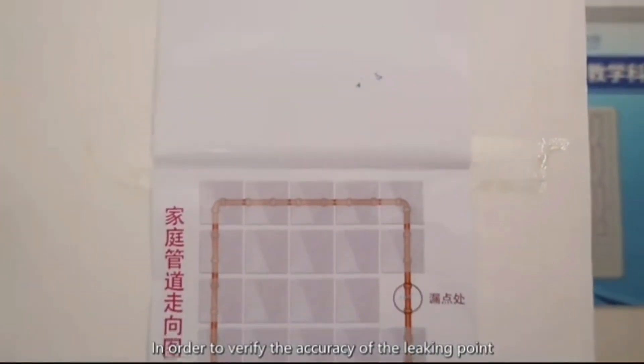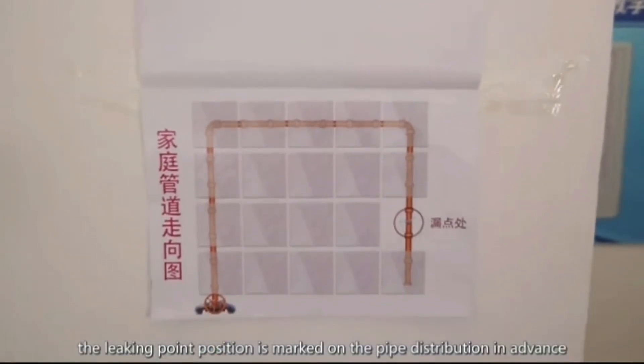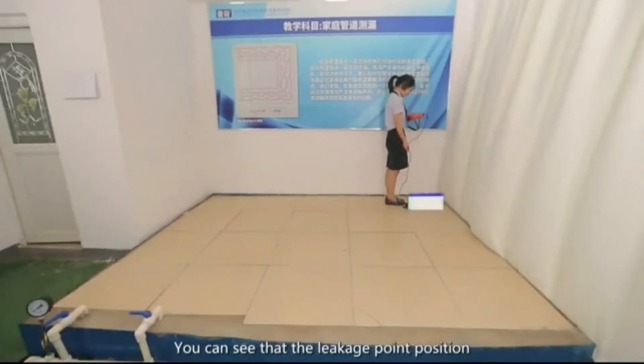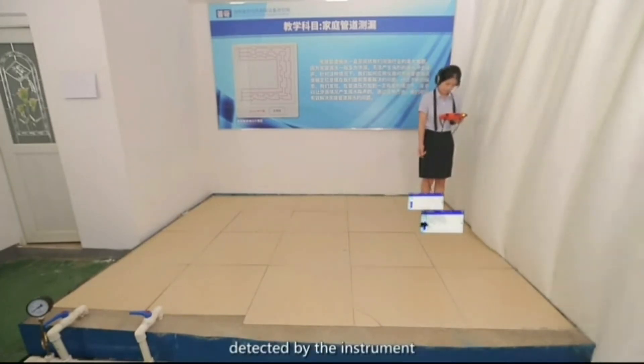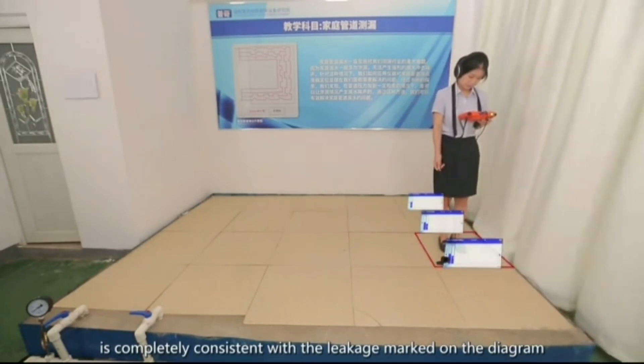In order to verify the accuracy of the leaking point, the leaking point position is marked on the pipe distribution in advance. You can see that the leakage point position detected by the instrument is completely consistent with the leakage marked on the diagram.